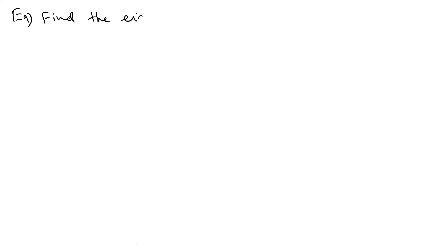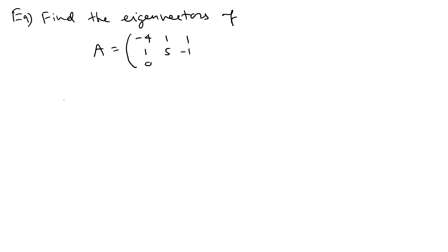As an example, find the eigenvectors of the matrix A = [[-4, 1, 1], [1, 5, -1], [0, 1, -3]]. Always, if you want to find eigenvectors you have to find eigenvalues first.